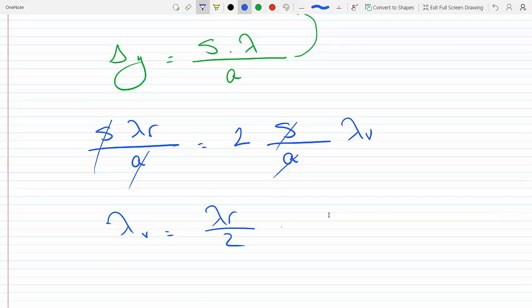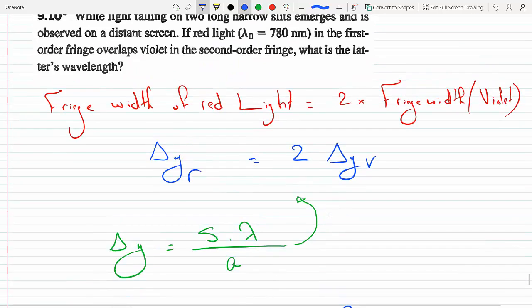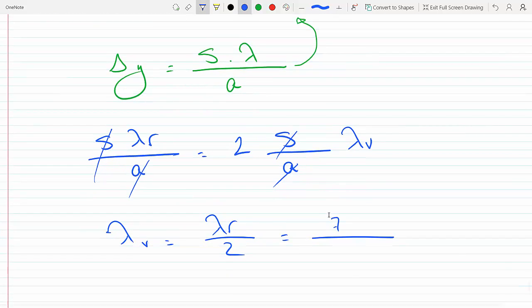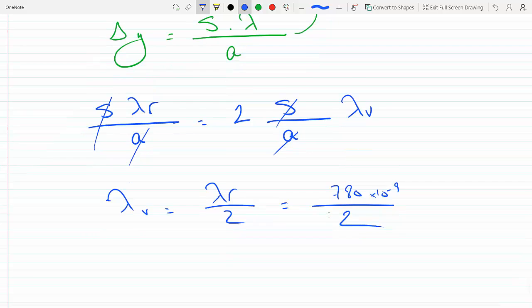Lambda red over 2. So the ratio of the fringe widths is proportional to the ratio of the wavelengths. And so we got 780 times 10 to the minus 9 divided by 2.